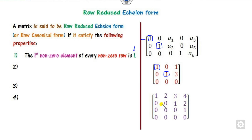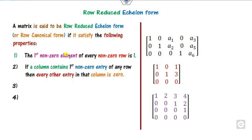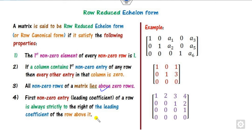You can see all three matrices satisfy this first property. The second additional property is that if a column contains a leading 1, then all other entries in that column — both above and below — must be 0. The rest of the two properties are the same as for row echelon form, and the first non-zero elements must appear in columns C1, then C2, then C4, preserving the indexing.